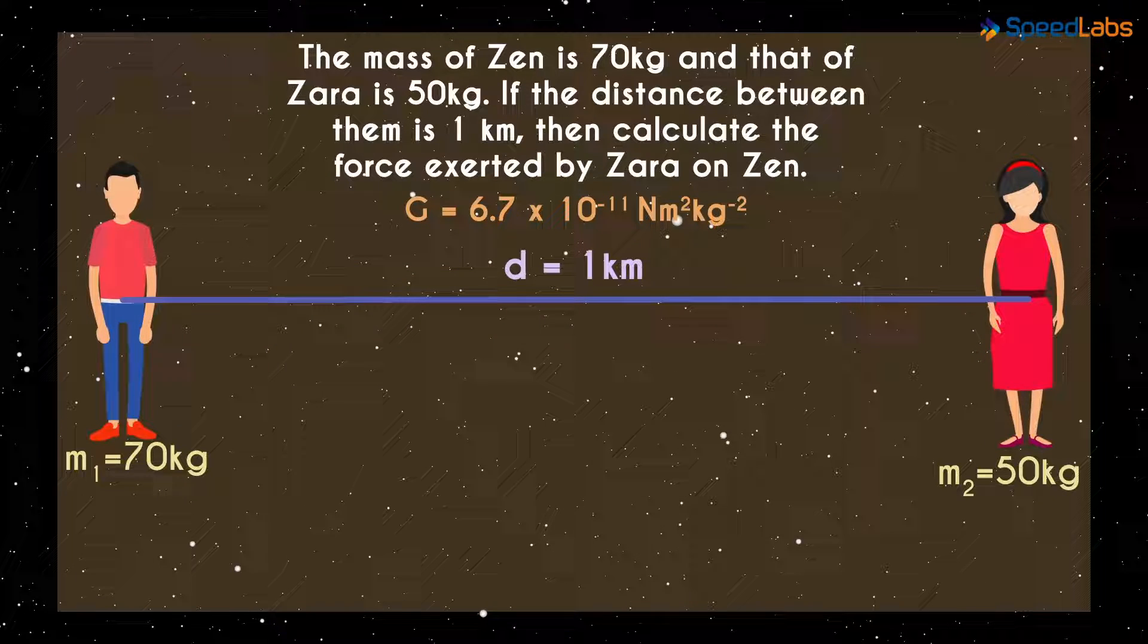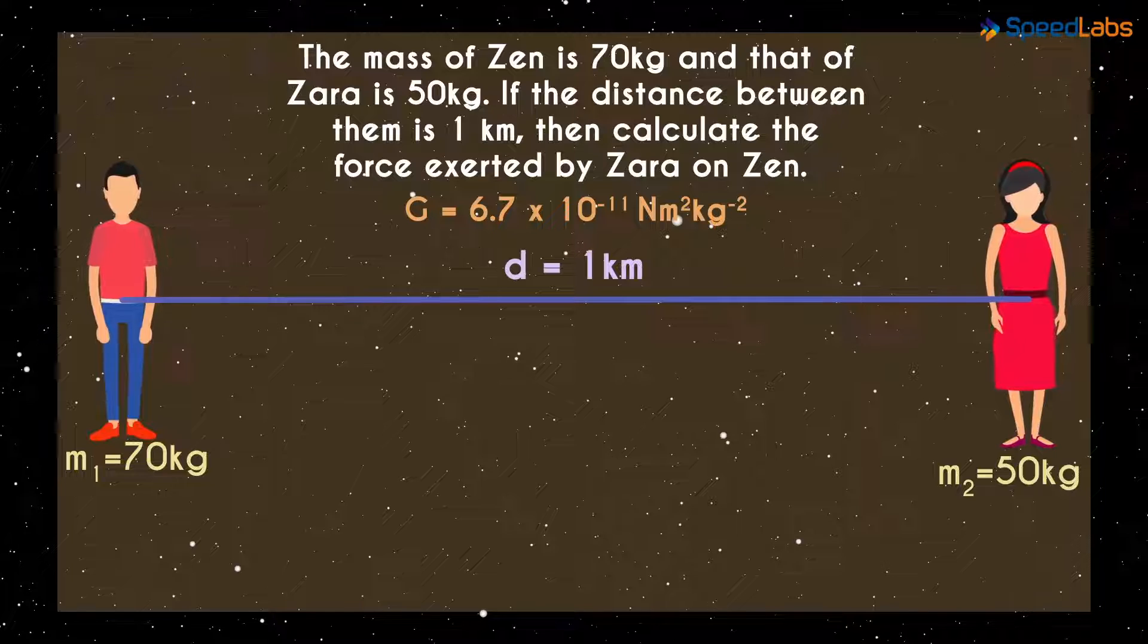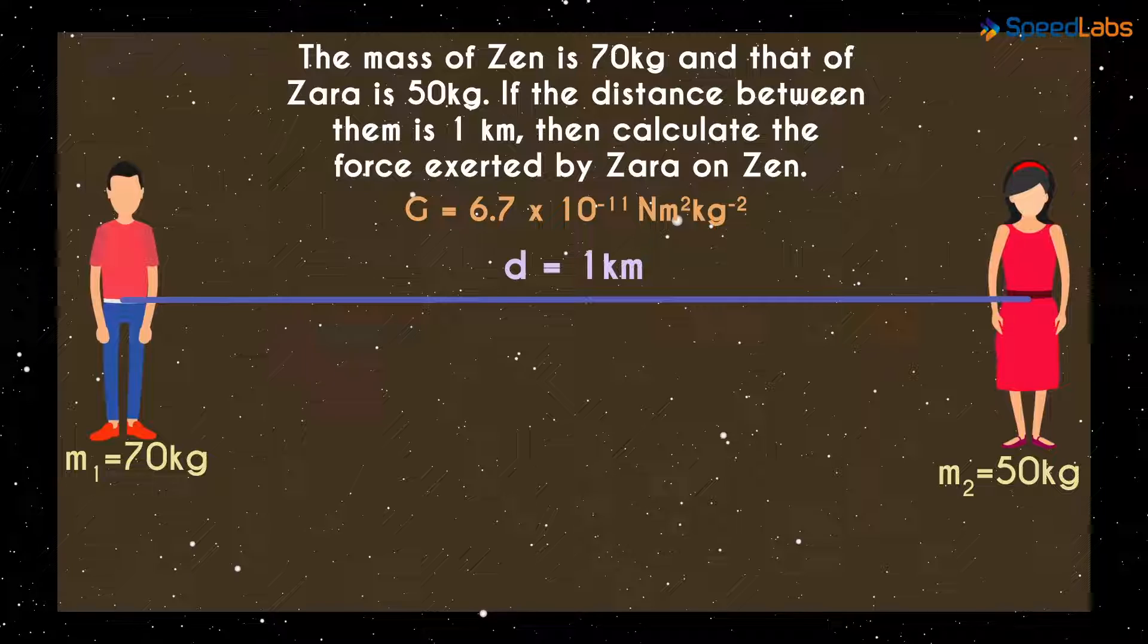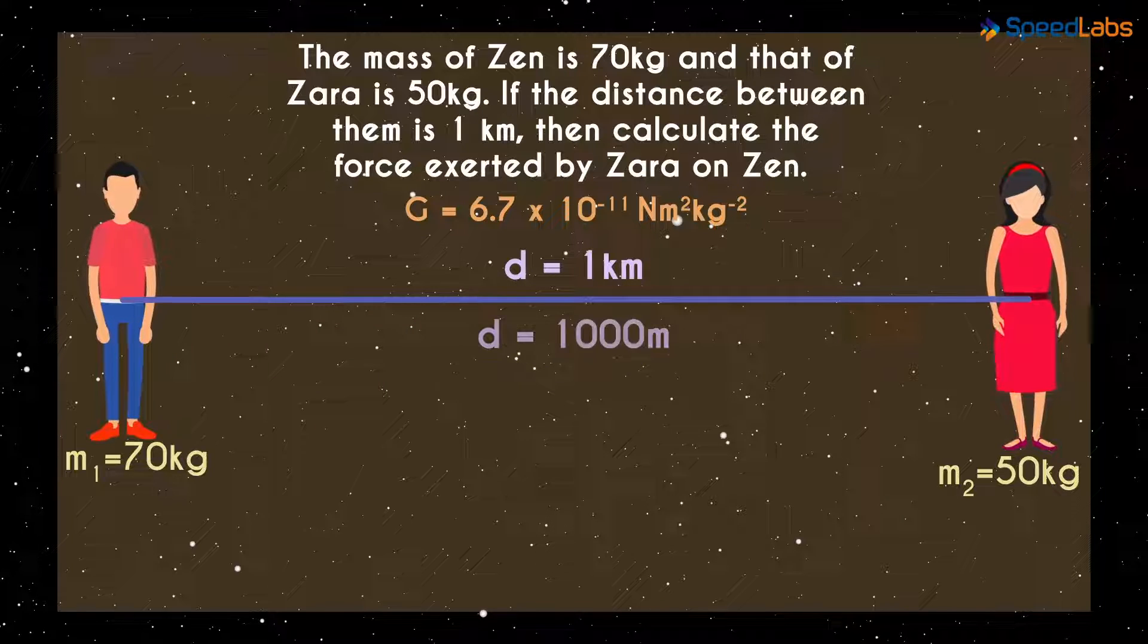Next, we check if all the units are standard. Are they? Well, the only thing we need to convert is the distance in kilometers to meters. The distance D will equal 1000 meters.